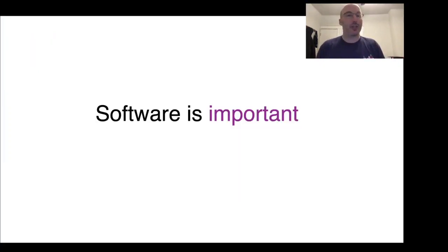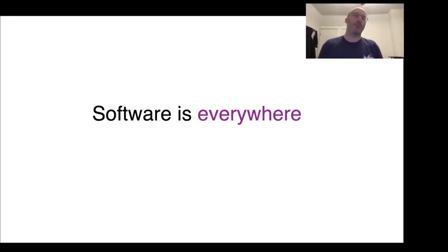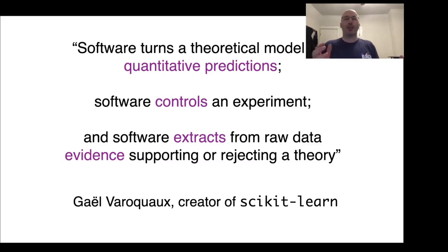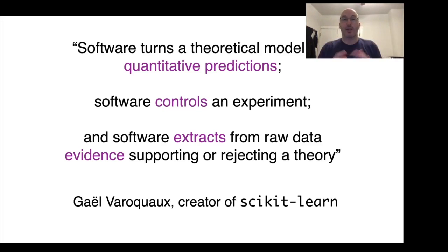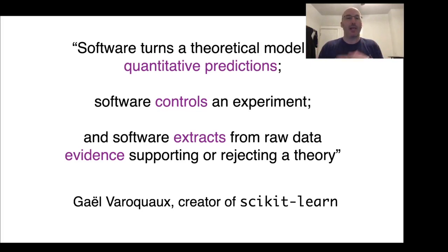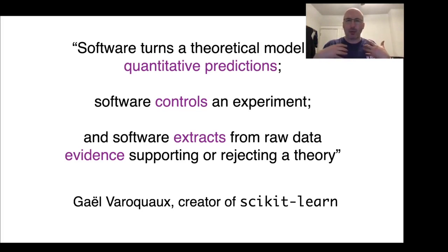We in this community all know that software is important, and it's also everywhere. Here's a nice quote from Gael Varocco, the creator of Scikit-Learn: software turns a theoretical model into quantitative predictions, software controls an experiment, and software extracts from raw data evidence supporting or rejecting a theory. In other words, software is really key to the scientific process.